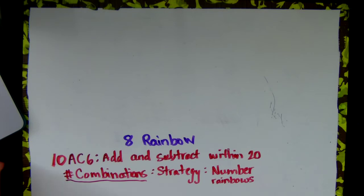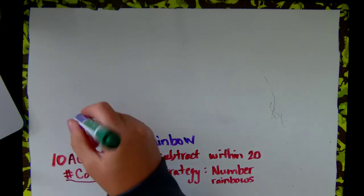We are going to be making our number 8 rainbow, trying to find all of the different combinations of the number 8. What plus what will equal 8 under the standard of 1.OA.C.6, add and subtract within 20.